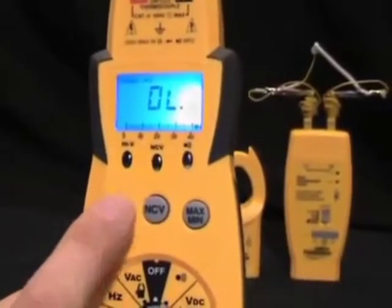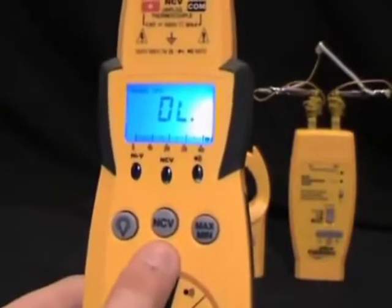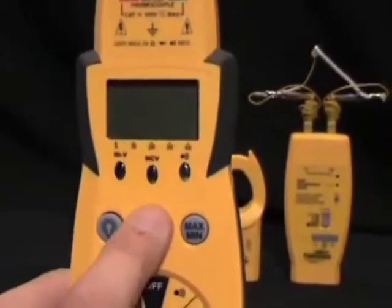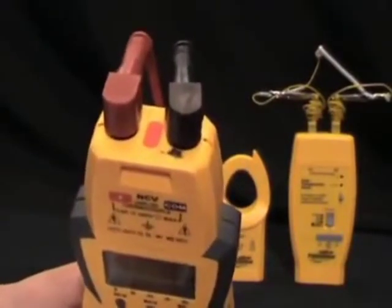We have the non-contact voltage button that you press and hold and put the tip next to something that you suspect is hot to see if it is hot or not. And we have the max and min button that will hold the max and min reading of whatever you're measuring.